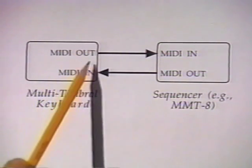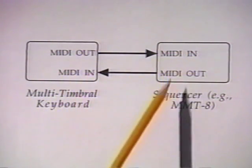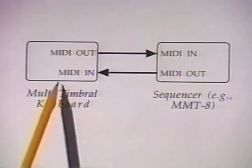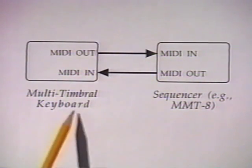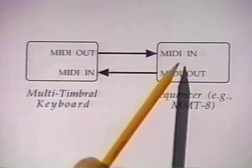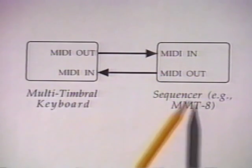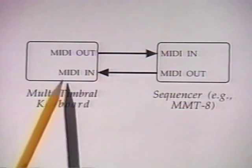In Diagram 2 we have a multi-timbral keyboard feeding a sequencer. The MIDI out from the keyboard goes to the MIDI in of the sequencer, and the MIDI out of the sequencer goes back to the MIDI in of the keyboard. That way, when you play a part on the keyboard, you can record it into the sequencer. Then on playback, you can play that sound from the keyboard.